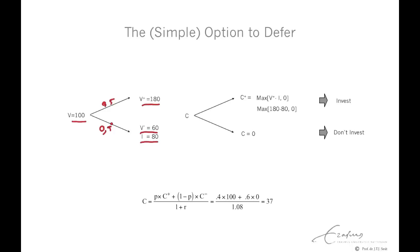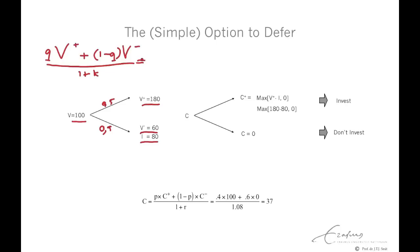We can estimate the current value using the standard traditional discounted cash flow method. So the true probability q times V+ plus (1 minus q) times V−, divided by the risk-adjusted discount rate (1 + k), should give the current value. In this case: 50% × 180 + 50% × 60, divided by 1.20, results in 100.